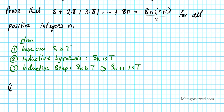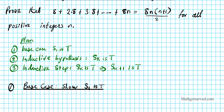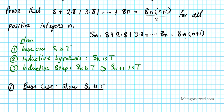Let's start with Part 1, the base case. We're going to show that S sub 1 is true. Let me rewrite this statement using S notation. S sub n is the statement: 8 plus 2 times 8 plus 3 times 8 plus 8n equals 8n times n plus 1 over 2, for n in the set of natural numbers — which is all positive integers.